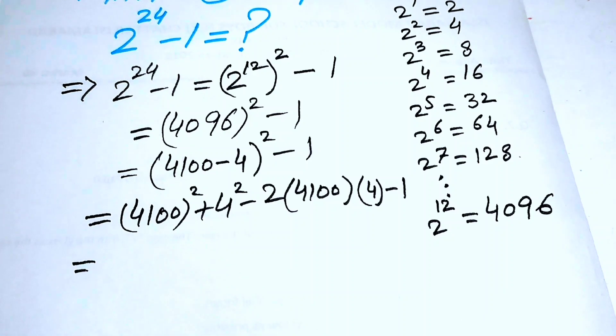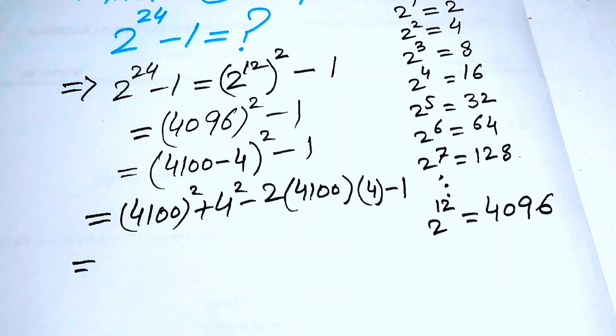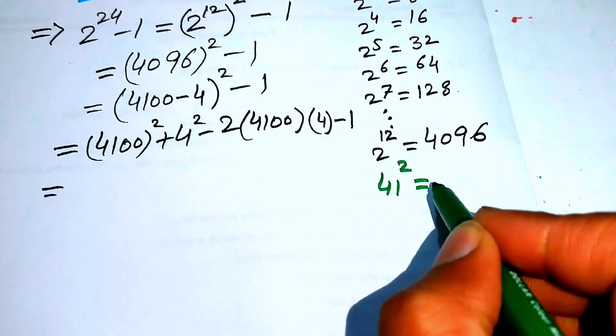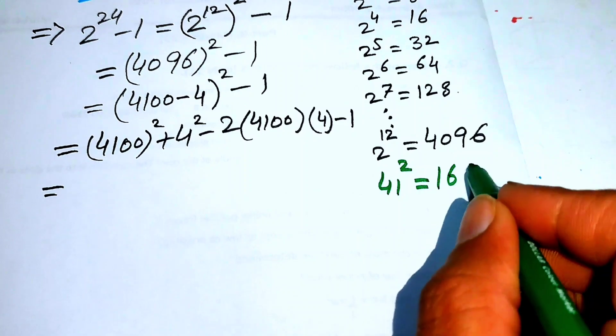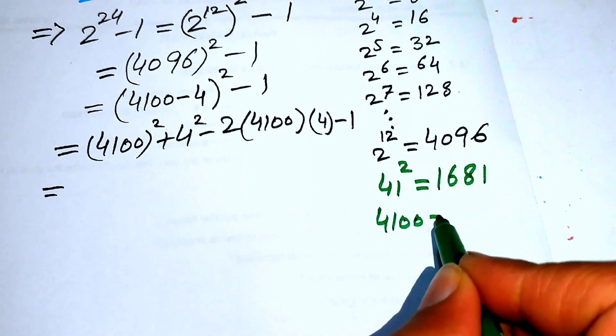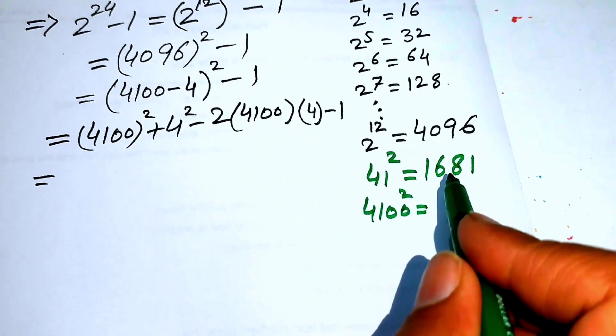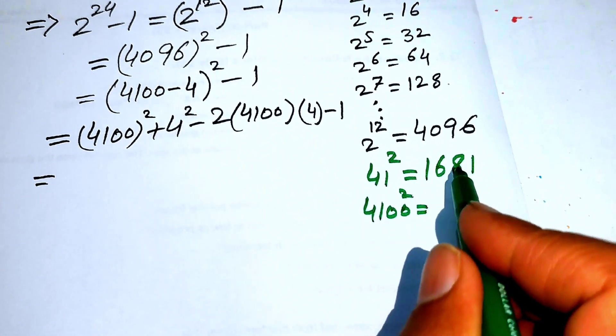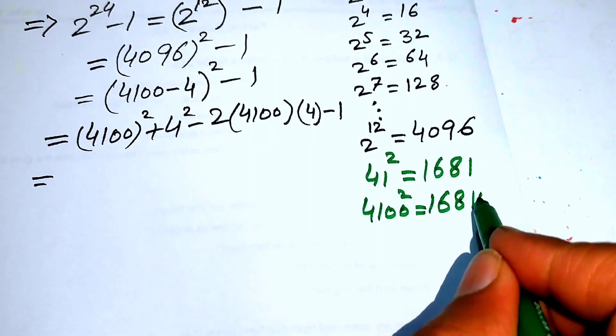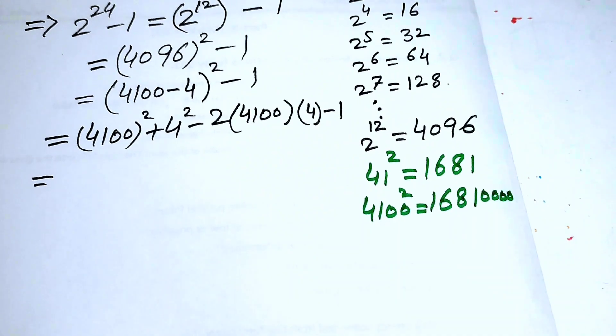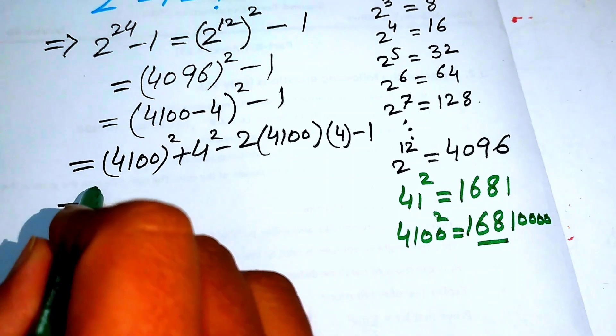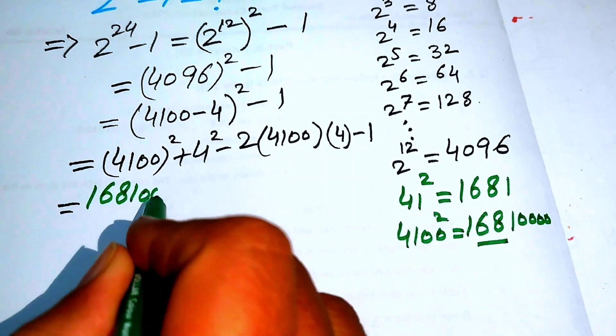After that, you just see here: a squared, we know that 41 squared equals 1681. Similarly, if we take the square of 4100, you just put four zeros in this value and you get 16810000. So we put this value here and you obtain 16810000.